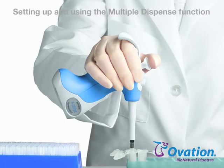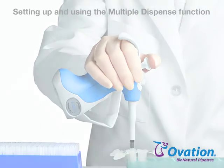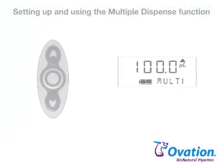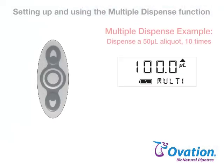To set up and run a multiple dispense liquid handling function, follow these steps. For this example, we will dispense a 50 µL aliquot 10 times.